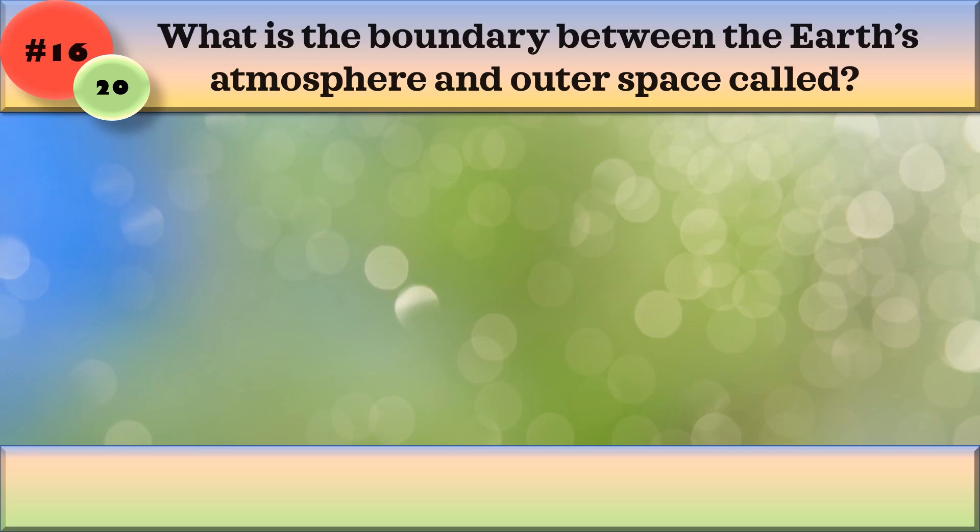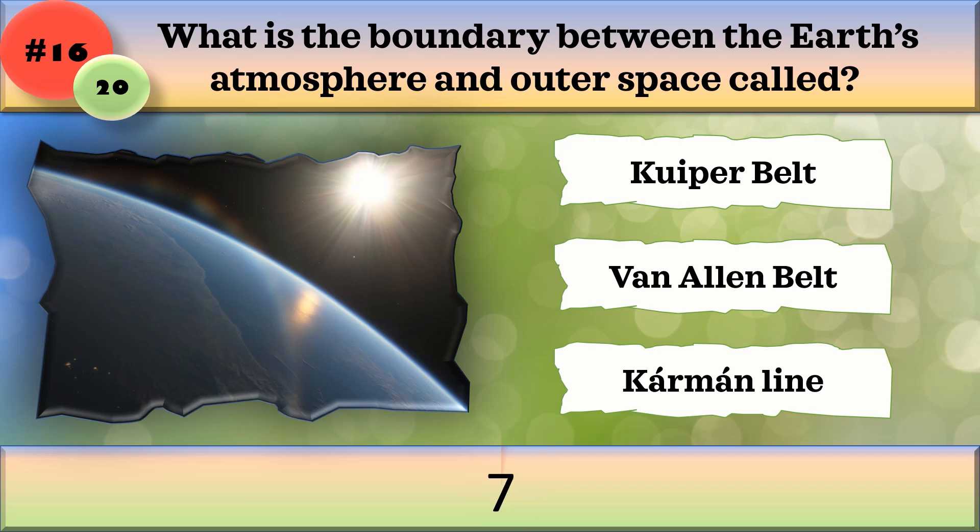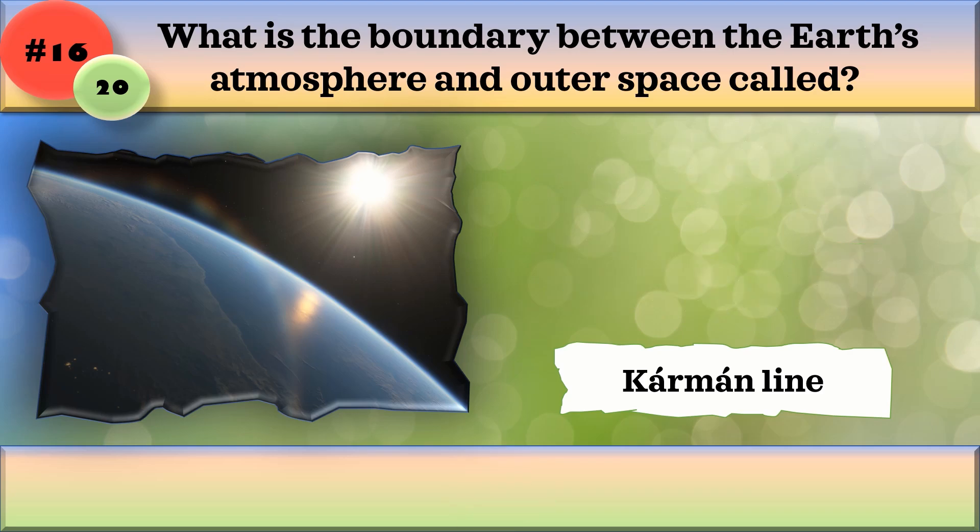What is the boundary between the Earth's atmosphere and outer space called? Kuiper Belt, Van Allen Belt, or Karman Line? Karman Line.